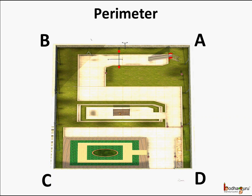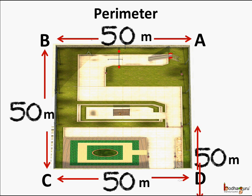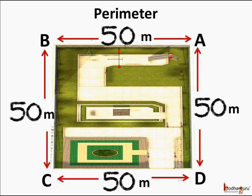First, what is perimeter? Here we have a garden which is square in shape. Let's assume each side is 50 meters. So this is 50 meters, this is 50 meters, and this side also is 50 meters.